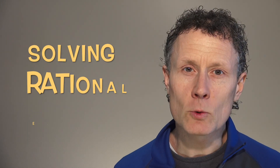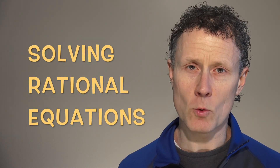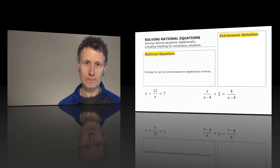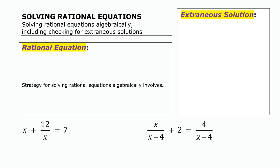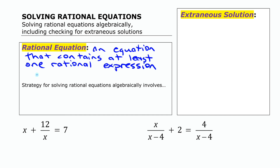In this video we are going to look at solving rational equations, including cases where you end up with extraneous solutions. Rational equations are equations that have algebraic fractions in them. How we solve these is by multiplying both sides of the equation by a common denominator, preferably the lowest common denominator, to clear the fractions.